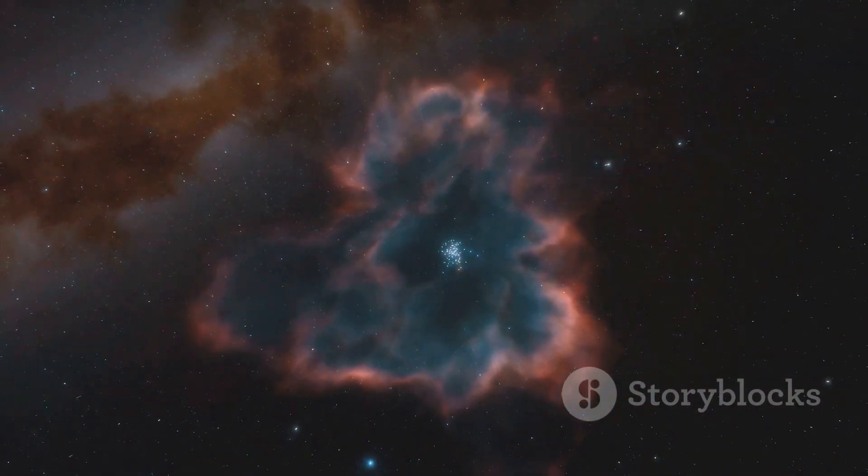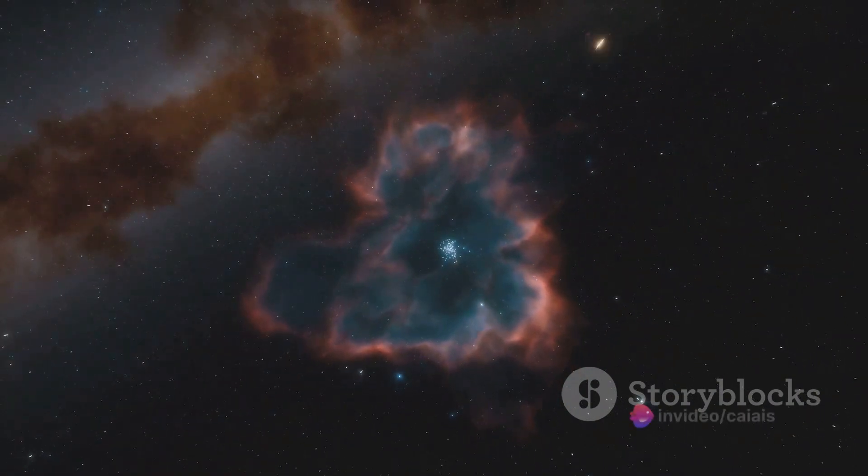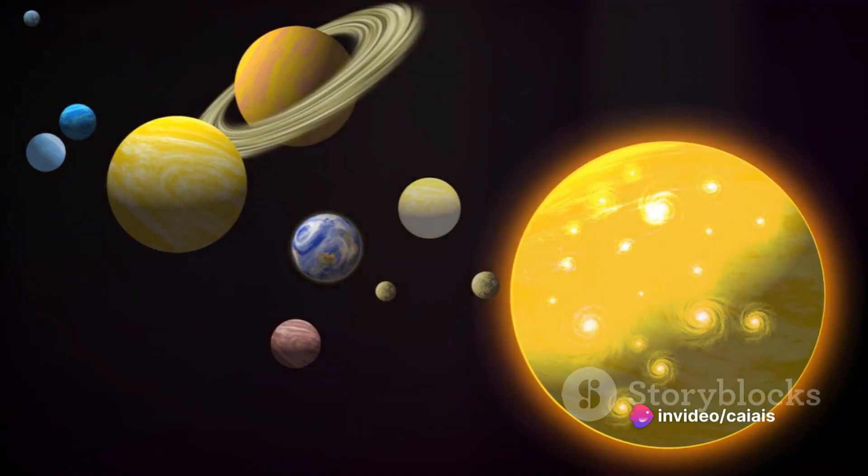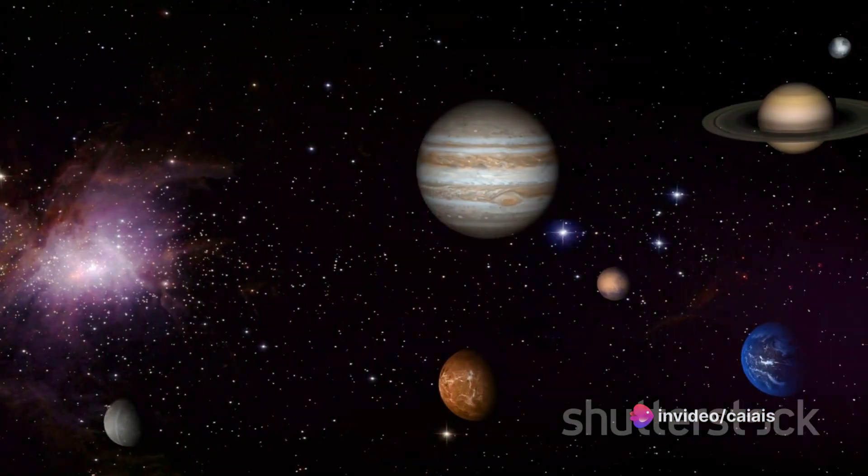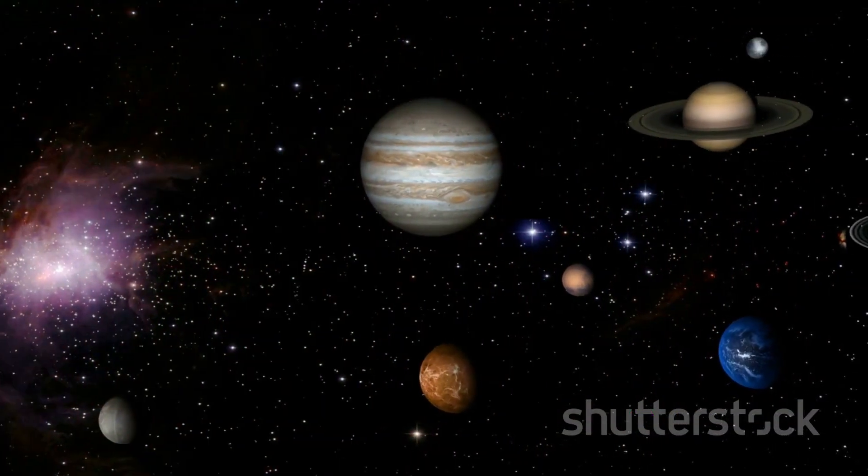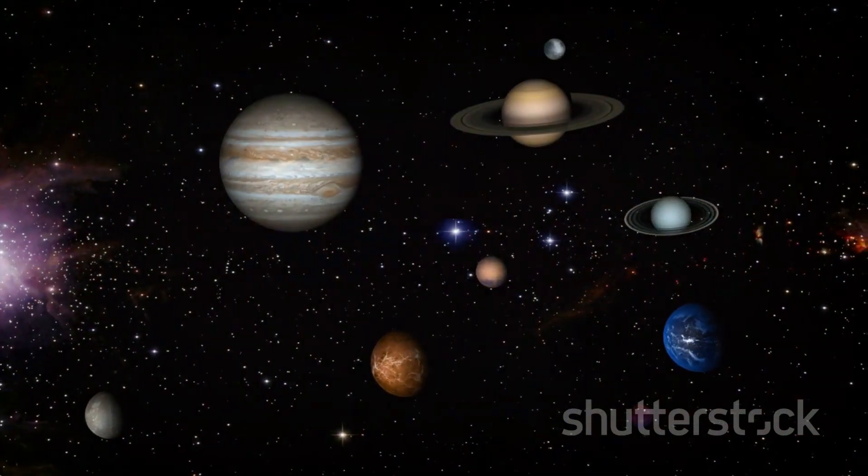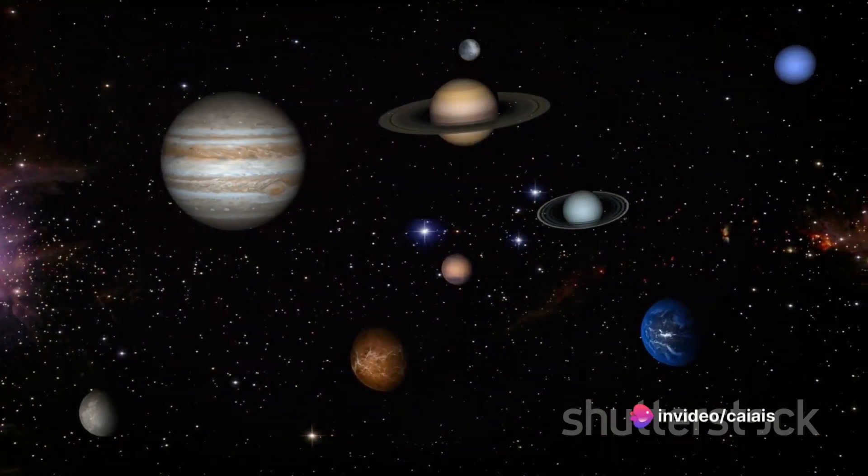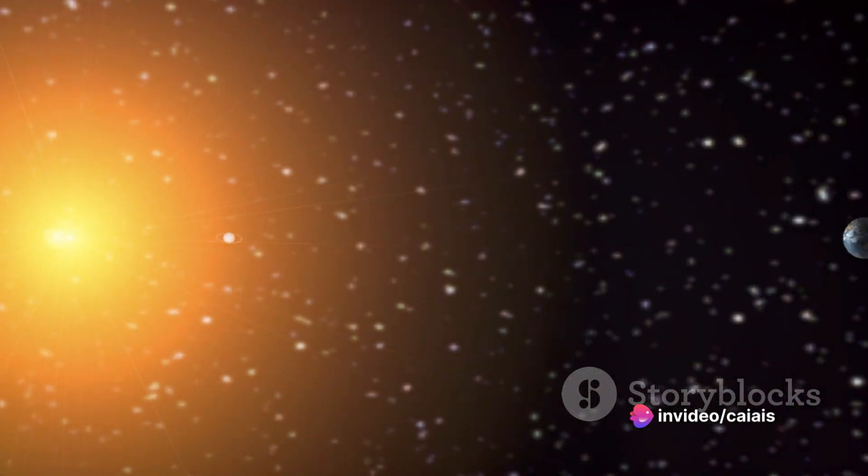Picture this: our sun, the heart of our solar system, encounters a clock star, a celestial body with incredibly powerful gravity. The sun, in its bright and fiery glory, is irresistibly drawn to this clock star. Its pull is so strong that not even the sun, with its vast size and energy, can resist. Slowly but surely, the sun begins to move closer and closer to the clock star. It's a gravitational attraction that nothing in our solar system can escape.